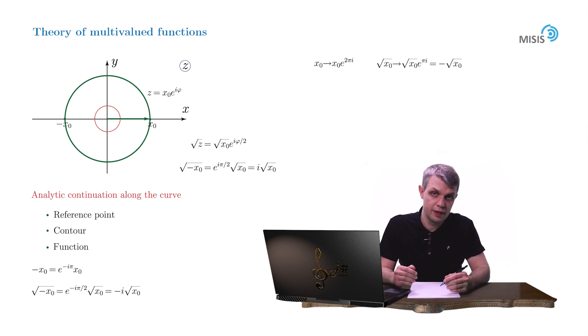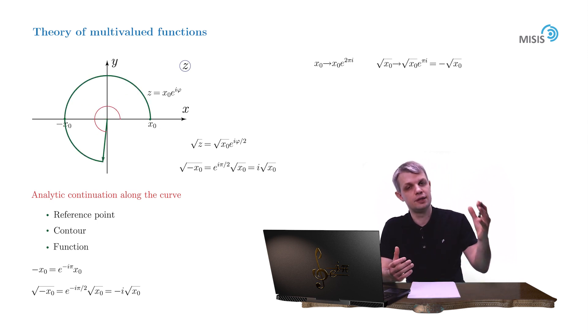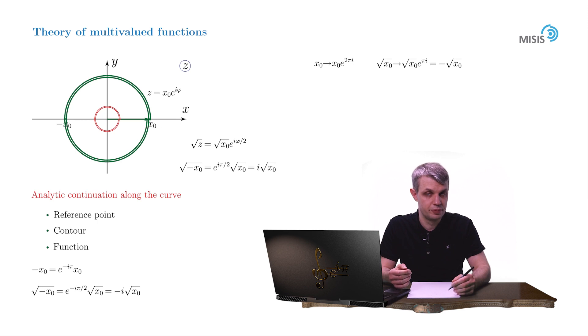But before we go any further, let's make one more interesting observation. Suppose we make two full counterclockwise rotations around the origin in the complex plane. We know that under the first rotation, the square root flips its sign.